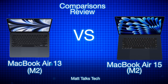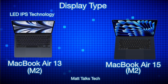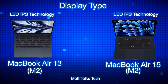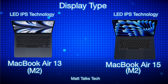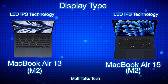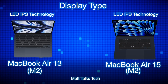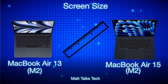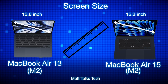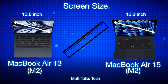Starting with the display types, the display technology in both MacBook Airs is identical. This is LED IPS technology — the standard LED technology we've had in MacBooks for many years. The main difference is the screen size: the MacBook Air 13-inch comes with a 13.6-inch display, whereas the brand new MacBook Air 15-inch has a 15.3-inch display, making it definitely larger than its smaller sibling.